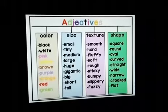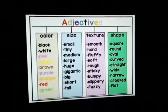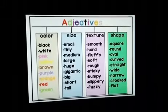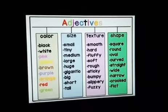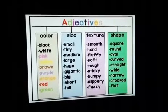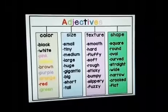Texture — what kind of texture? Smooth, hard, fluffy, soft, etc. Shape — what kind of shape? Square, round, oval, straight, curved, wide, narrow, etc.